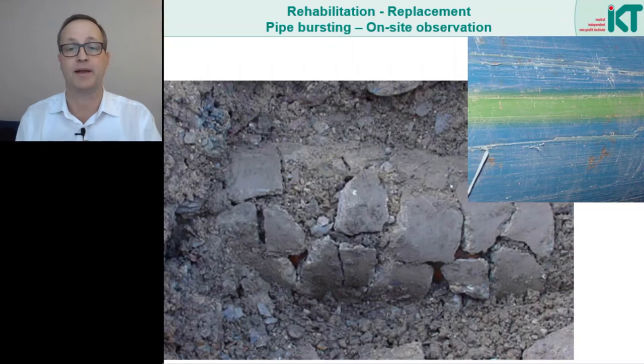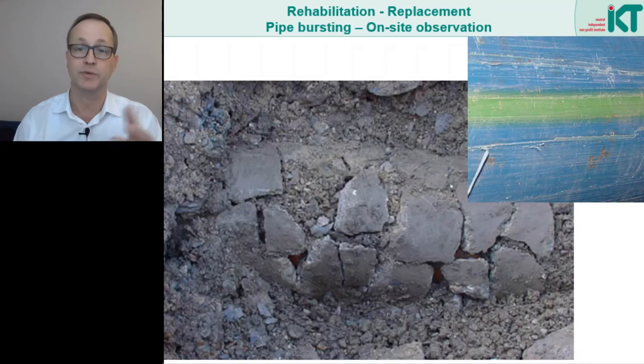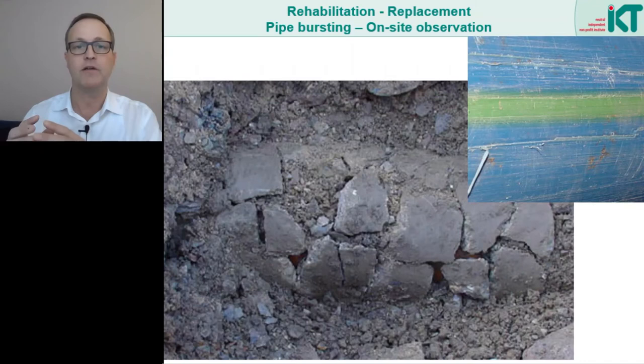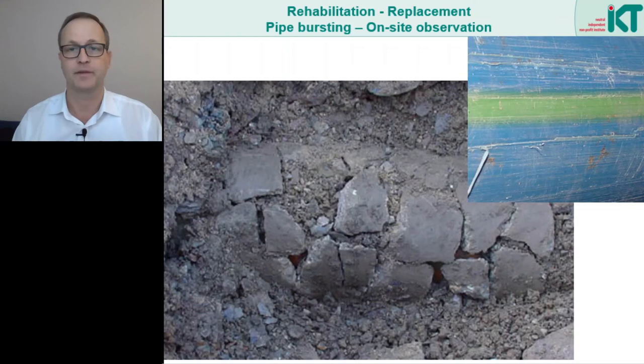Some manufacturers therefore provide the pipes with a special protective coating, as we see in this picture. Scoring is clearly visible here but it has damaged only the protective coating and not the actual product pipe. For quality assurance on the construction site it is advisable to take a sample in the target pit from the pipe section that lies directly behind the bursting head. This sample has run through the entire section and so it has experienced the maximum abrasion. If no damage to the product pipe can be seen here then the rest of the pipe string will most likely be undamaged.